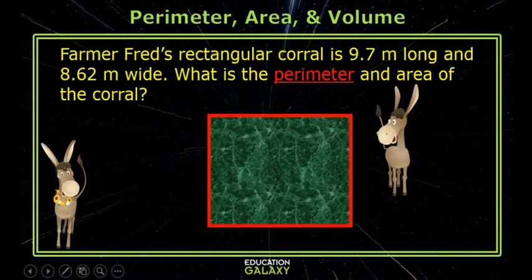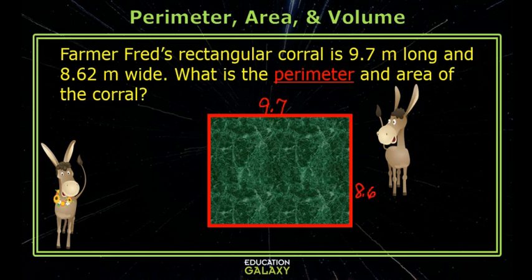I'll do the next one, Maisie. Okay. Well, this is Farmer Fred's corral. It's shaped like a rectangle. It's 9.7 meters long and 8.62 meters wide.